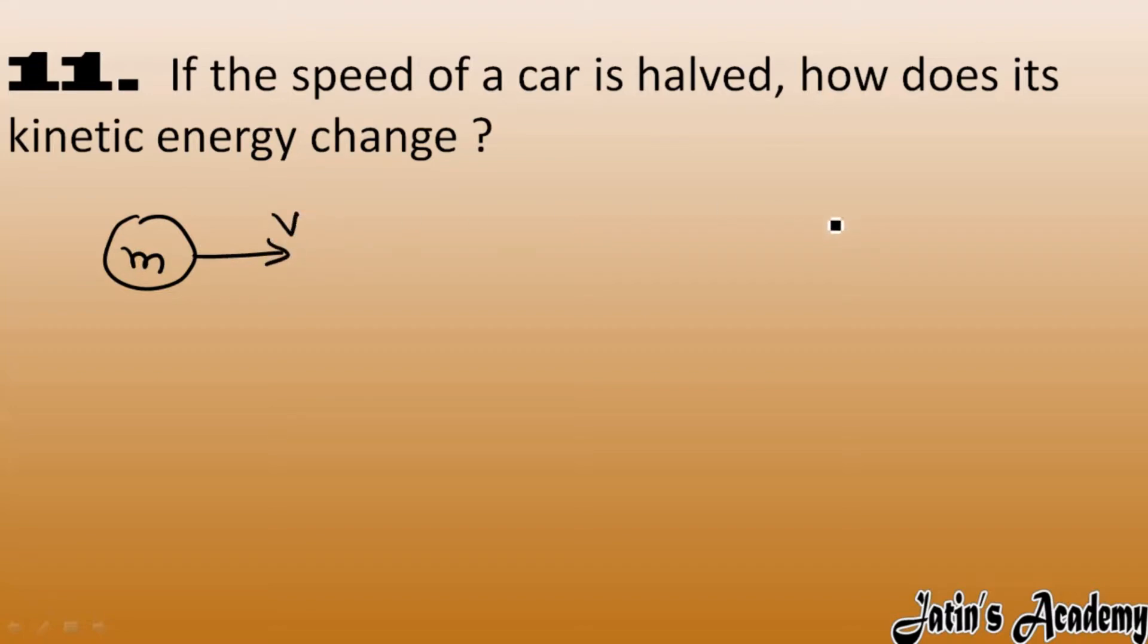Now in the second case, mass is the same - they are not talking about mass but they are saying that the speed is half, means velocity is v by 2. Now we have to calculate how the kinetic energy changes.